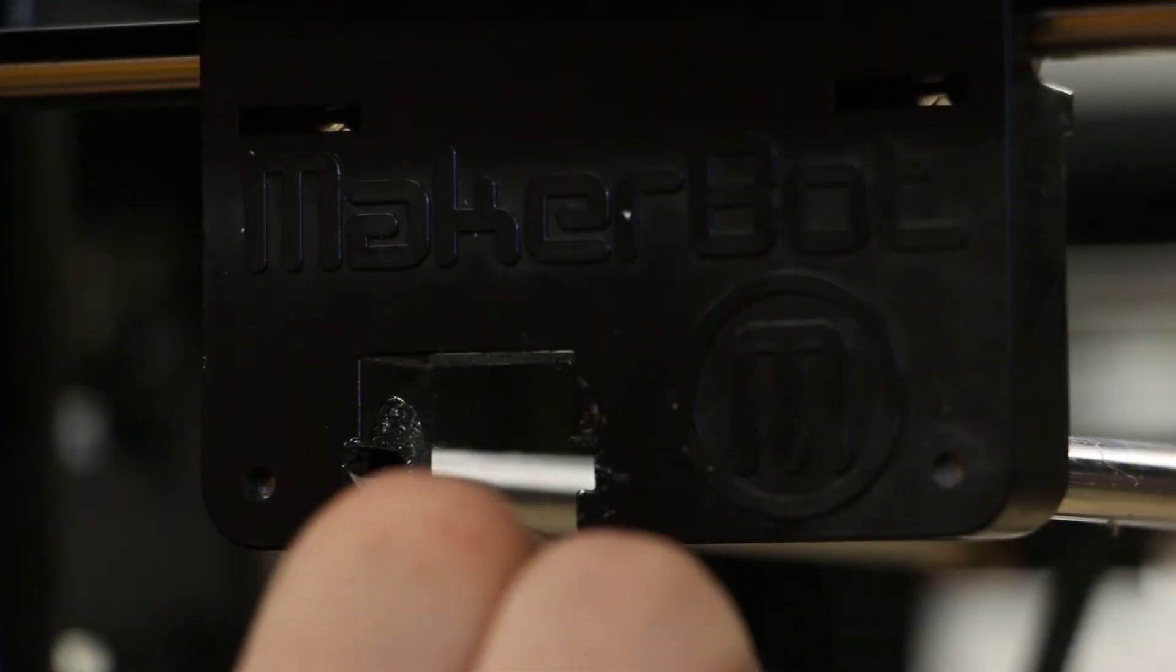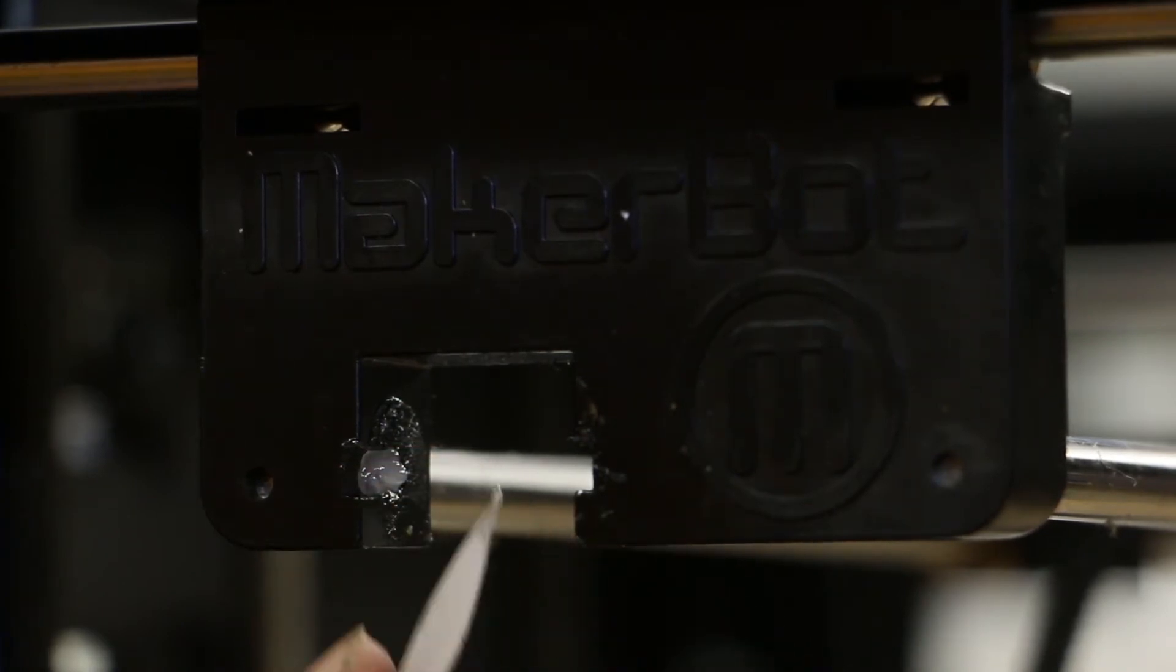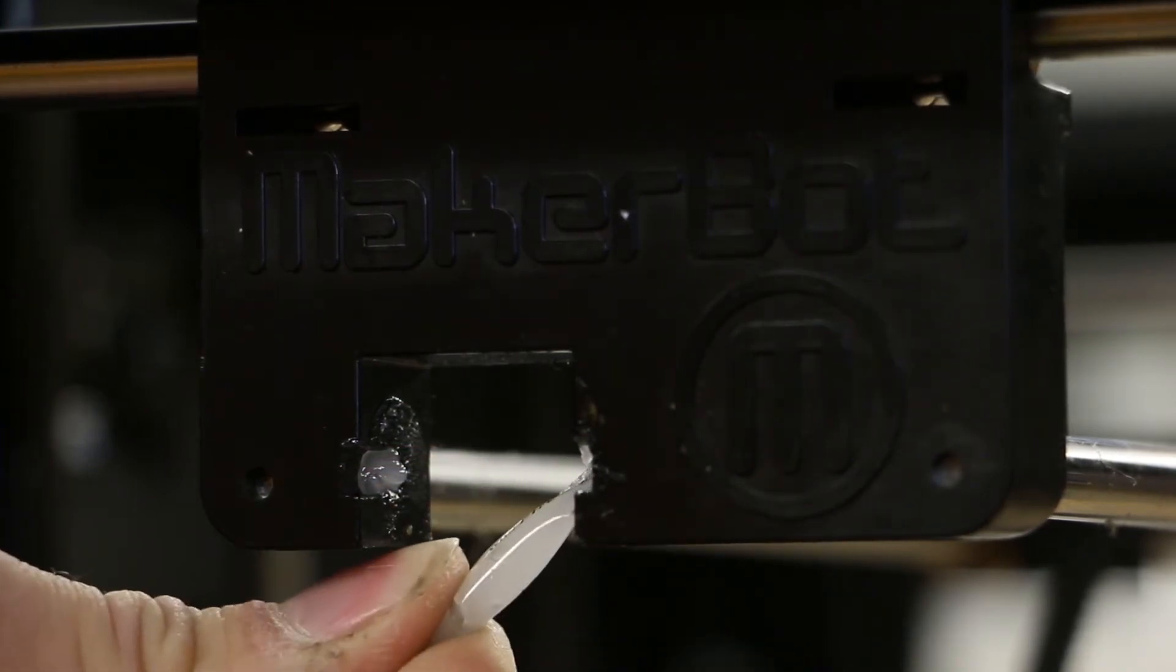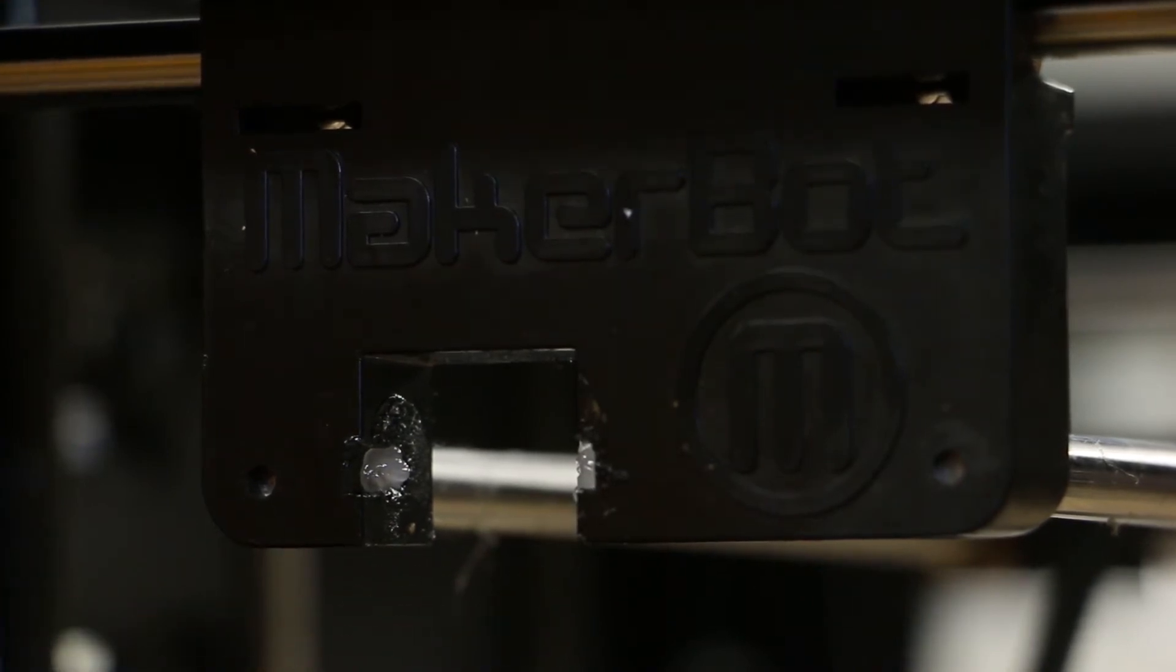Moving to the left side of the printer, we'll grease the Y-axis secondary prior to reinstalling the idler pulley. A healthy amount of grease ensures that the plastic won't rub on the metal rod.